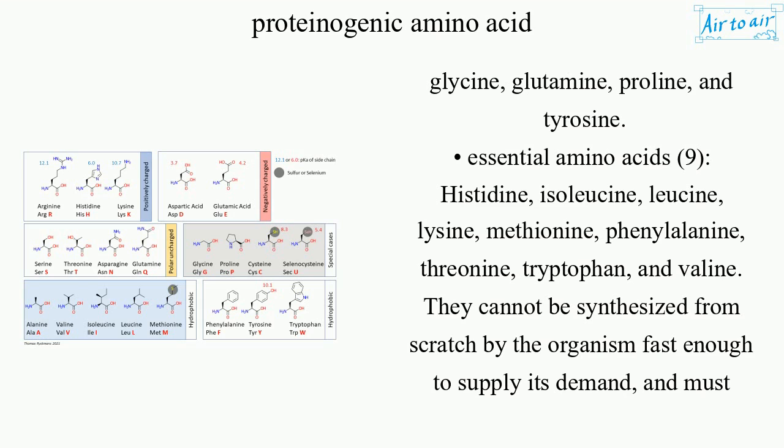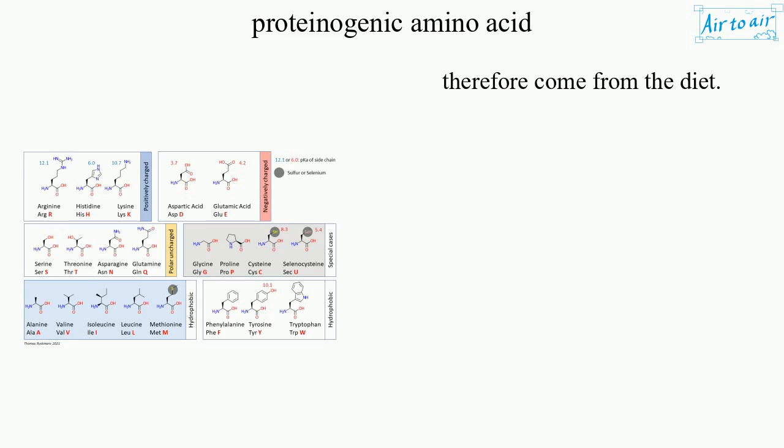Essential amino acids — 9 total: histidine, isoleucine, leucine, lysine, methionine, phenylalanine, threonine, tryptophan, and valine. They cannot be synthesized from scratch by the organism fast enough to supply its demand, and must therefore come from the diet.